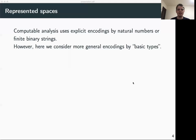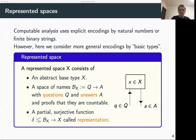In the incone library, represented spaces are defined similarly. However, instead of encoding everything explicitly by finite strings, we allow slightly more general encodings that make things more practical. A represented space in incone consists of the following things: first, an abstract base type X — this can be any type in Coq, and usually this type will have a definition that in some sense is not computational, relying on some non-computational axioms.